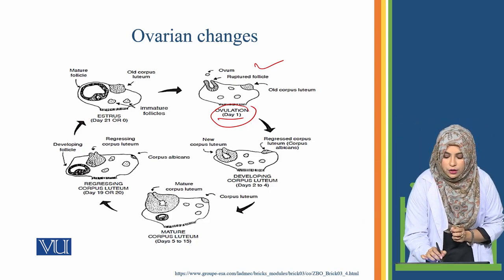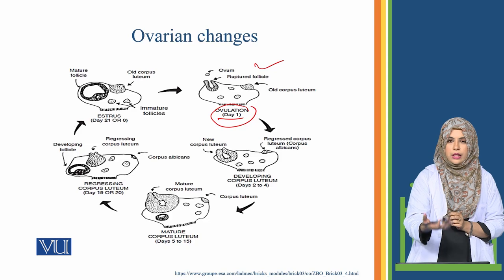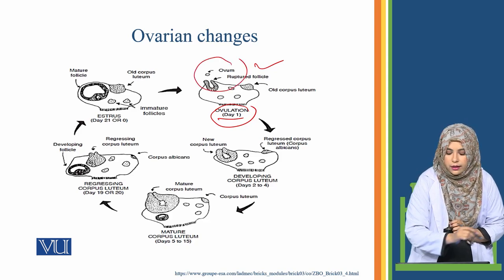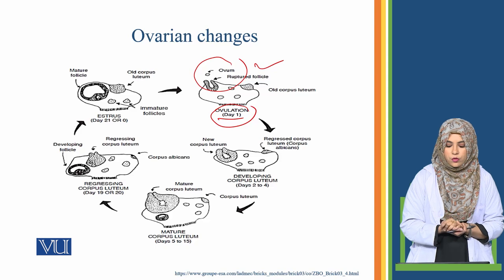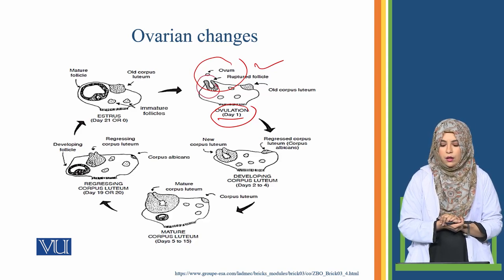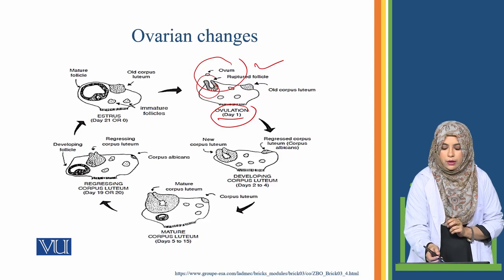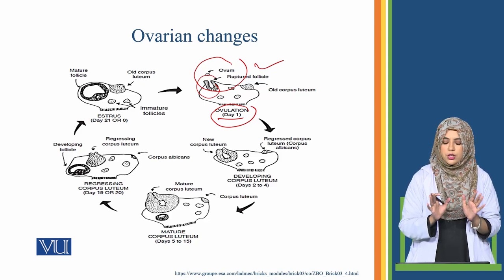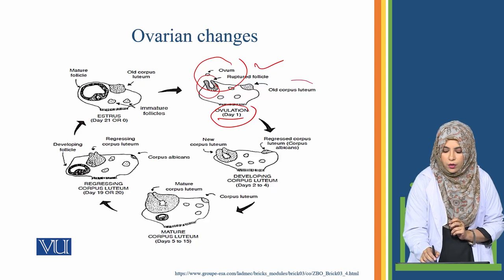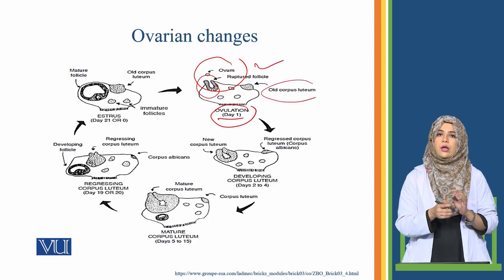Ovulation means the egg is released from the follicle — you can see an egg which has been released from the follicle. The back structure is the ruptured follicle. On the other side of the ovary there are some immature follicles which are not yet in the growth stage. Here the old corpus luteum is also shown, which was from the previous cycle. This is day one.